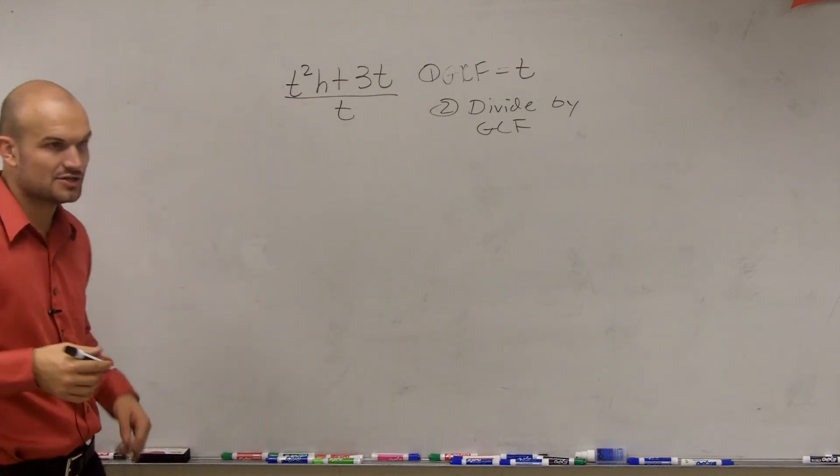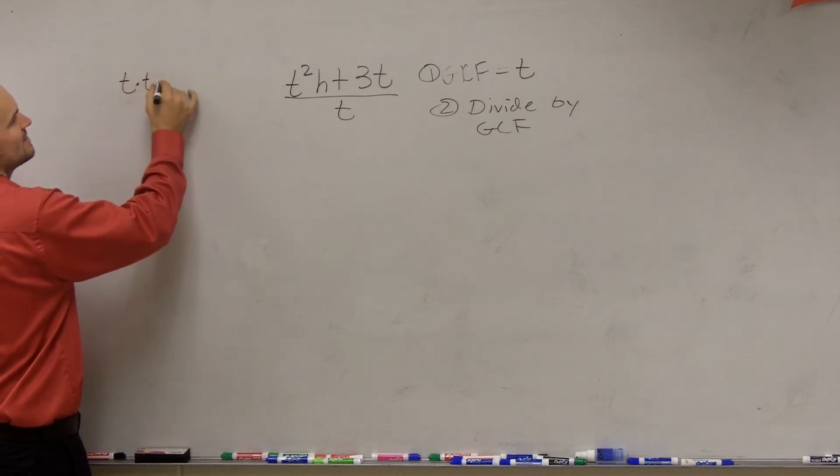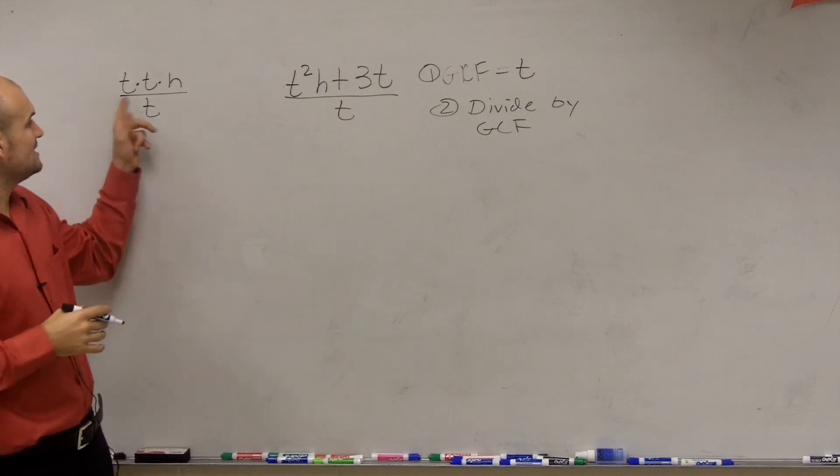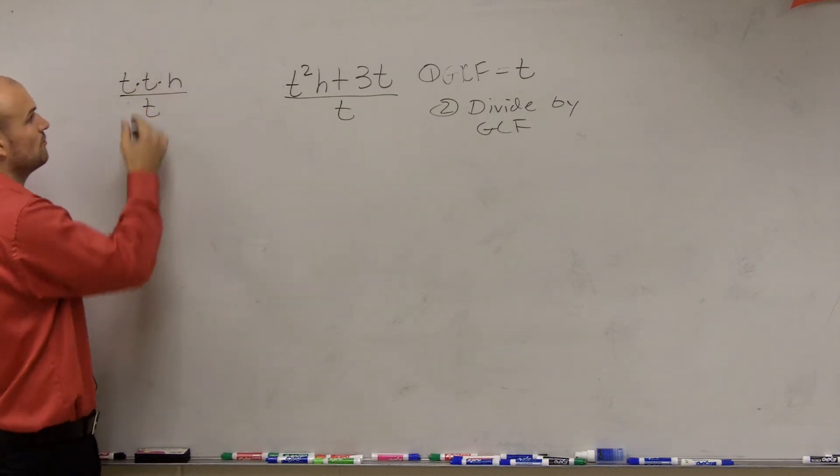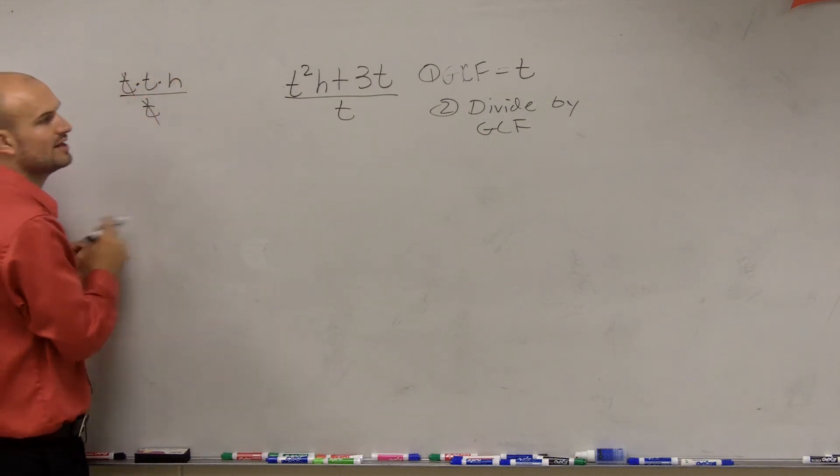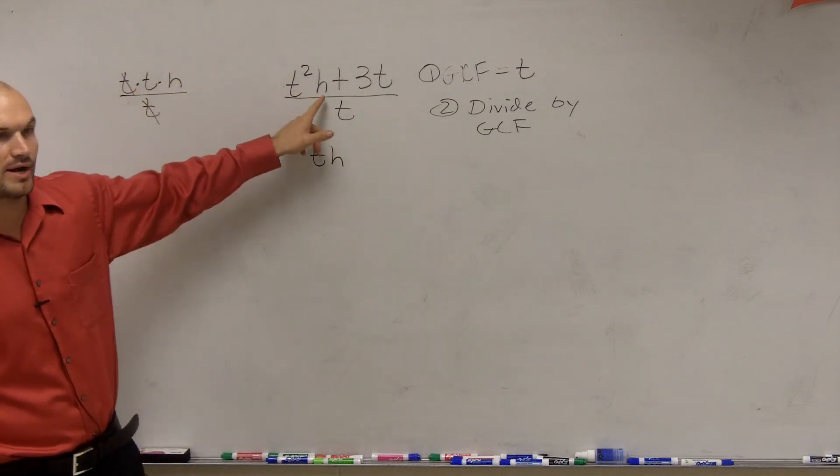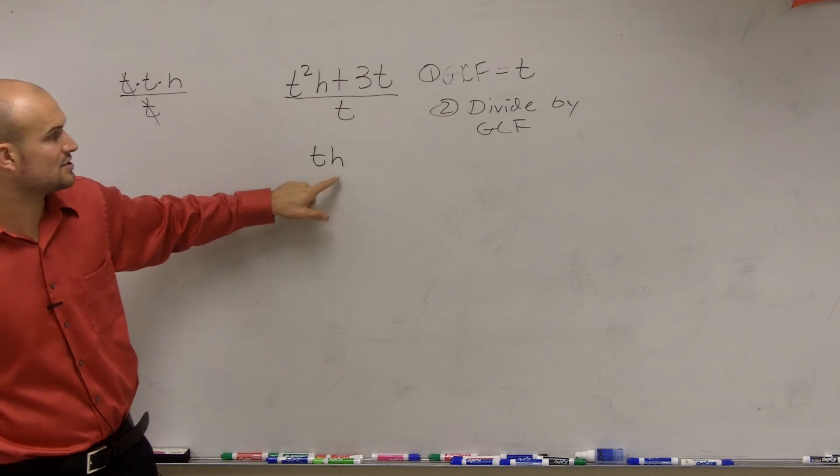Well, the best way I can do this is if you factor t squared, you get t times t times h divided by t. Right? So t times t times h divided by t. T divided by t we know equals 1. So we can say these divide out to equal 1, which are just going to leave you with t times h.